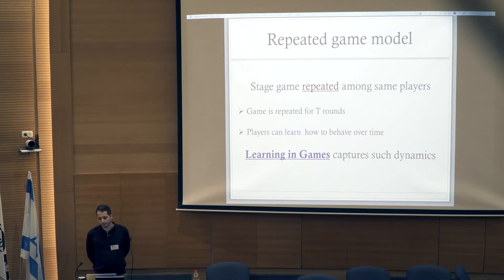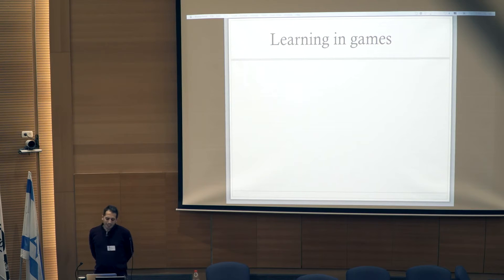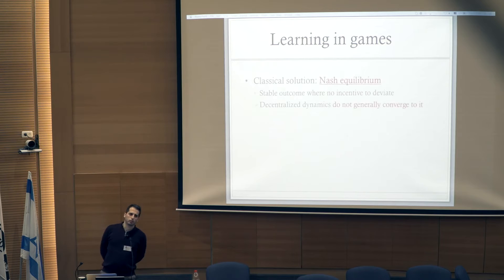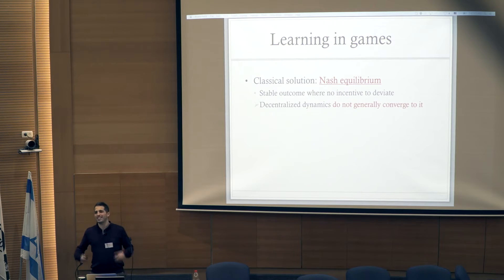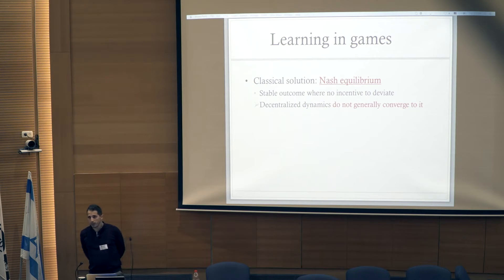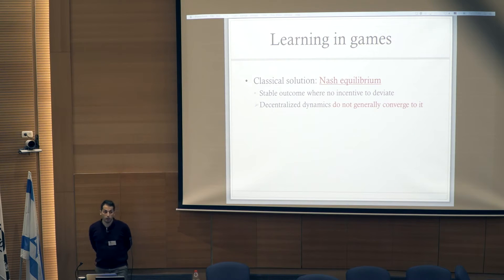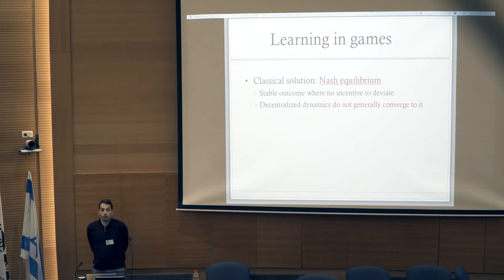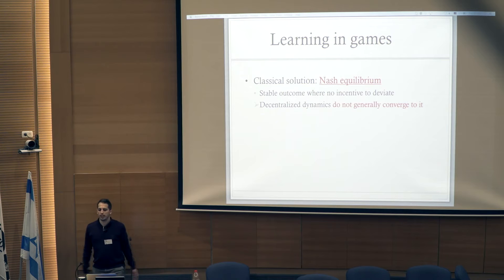The area of learning in games captures exactly such learning dynamics. The classical notion used in game theory is Nash Equilibrium, which in repeated game settings corresponds to a stable outcome where no player has a unilateral incentive to deviate. However, as discussed yesterday, there are many critiques for this notion — in particular, decentralized dynamics do not generally converge to Nash Equilibrium in general games like auctions.